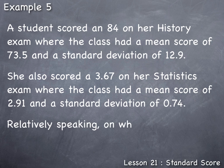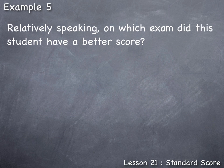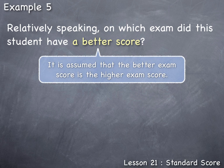Relatively speaking, on which exam did this student have a better score? In order to answer this question, we need to determine what is meant by a better examination score. In general, the higher the exam score the better the result, so it is assumed that the better exam score is the higher exam score. Since each of these exams were graded on totally different scales, we are not able to compare the scores directly. Instead, what we need to do is convert each exam score to a common scale in order to fairly compare the results.